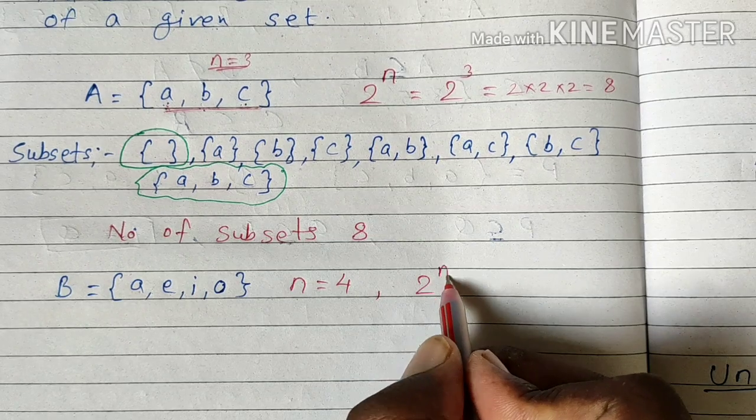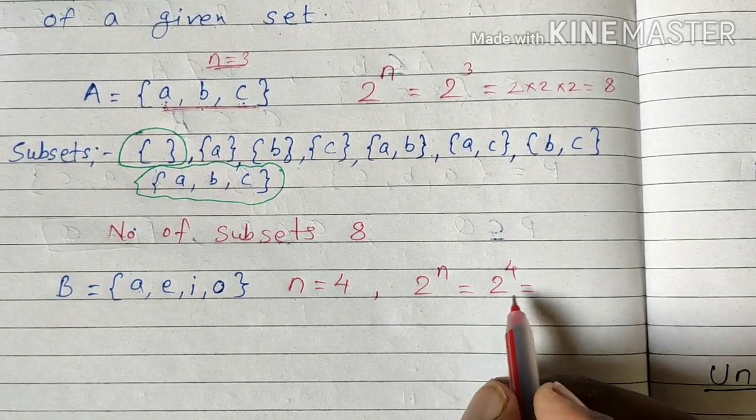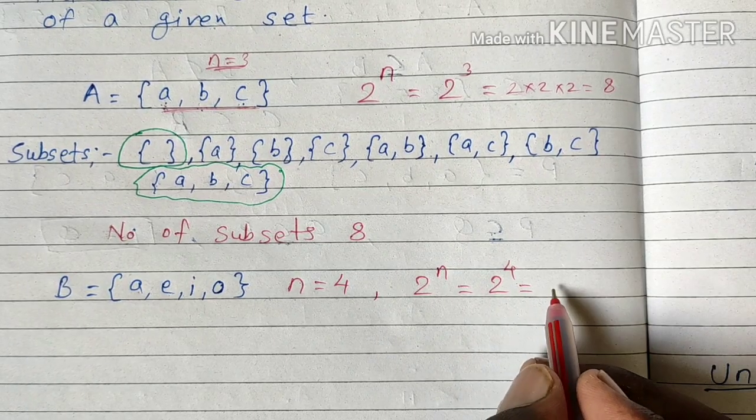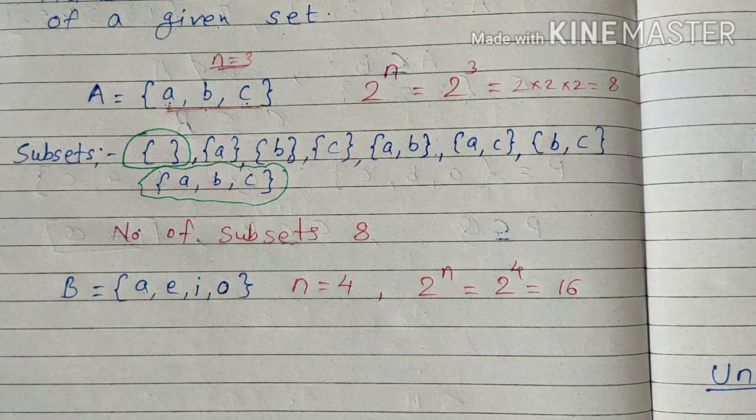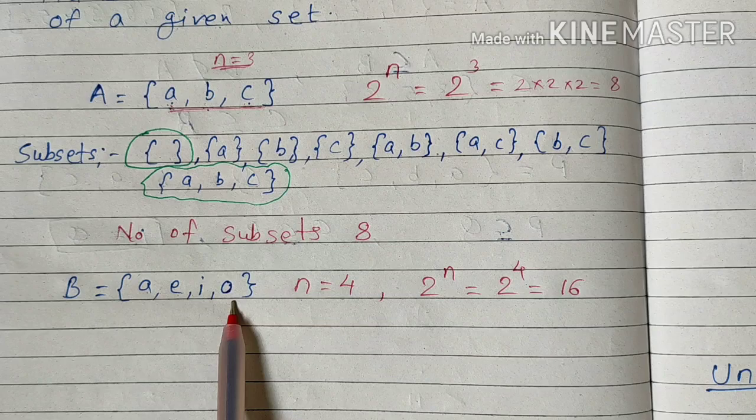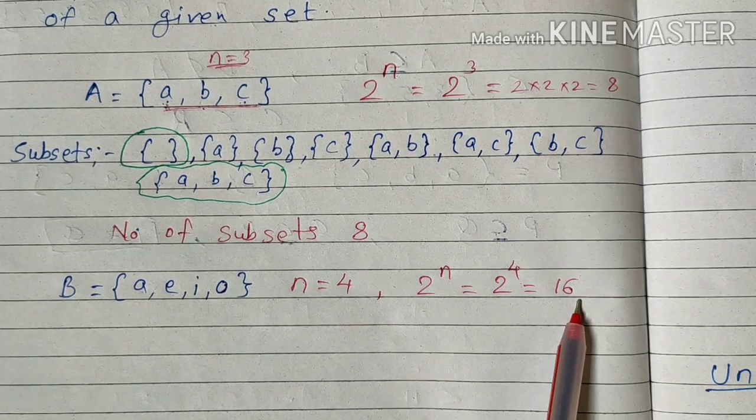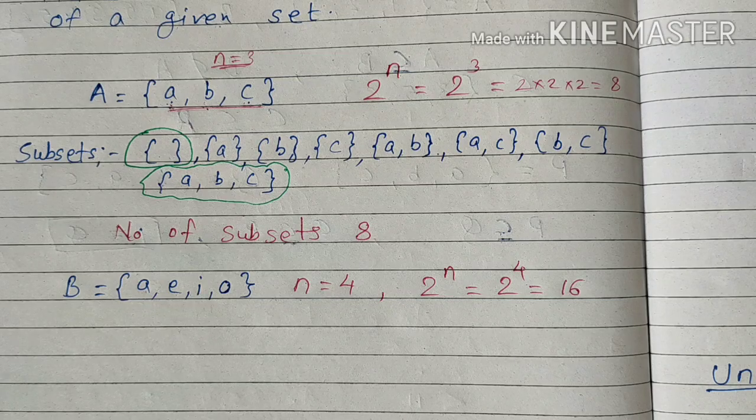2 raised to n means 2 raised to 4. 2 raised to 4 means 16. 2 multiplied by 2 multiplied by 2. So it gives us 16.